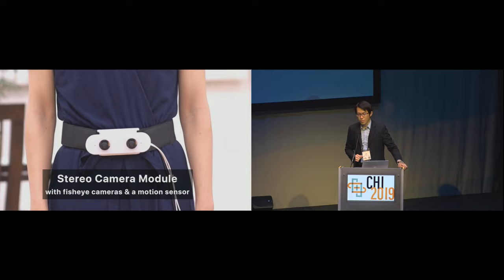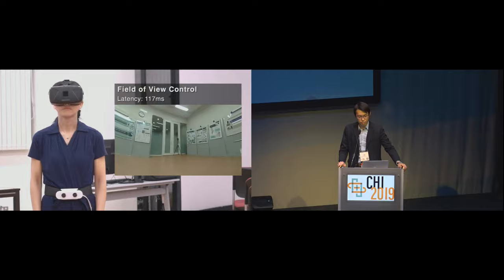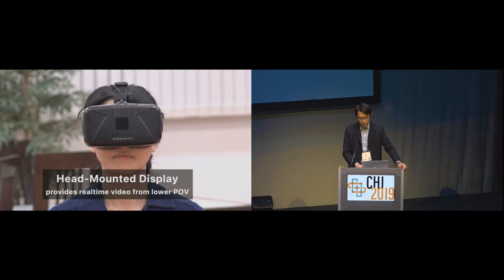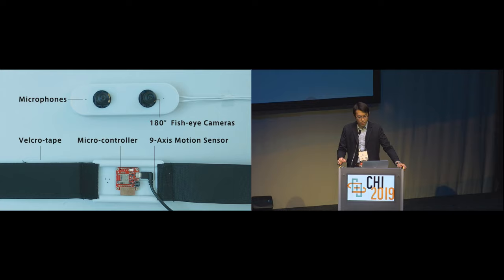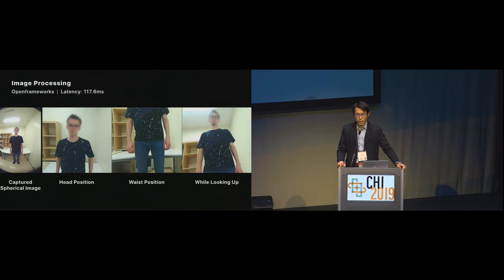This system consists of a wearable stereo camera with fisheye cameras and a head-mounted display to provide real-time video from a lower stature. The wearer can control their field of view using their own head orientation in real-time. The visual translator device equips two 180-degree fisheye cameras, microphones, and a motion sensor to detect the wearer's body orientation. The software is configured in an OpenFrameworks environment, creating stereo rectified images from captured spherical fisheye images. Latency was measured at around 120 milliseconds, which is sufficient for preserving the agency of the user's actions.